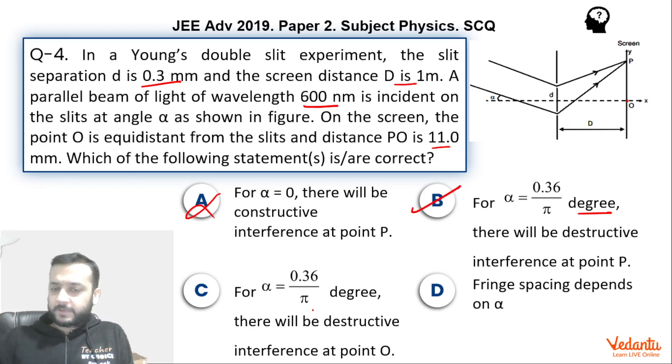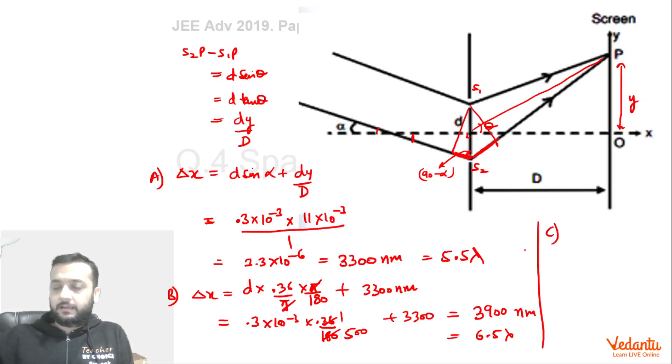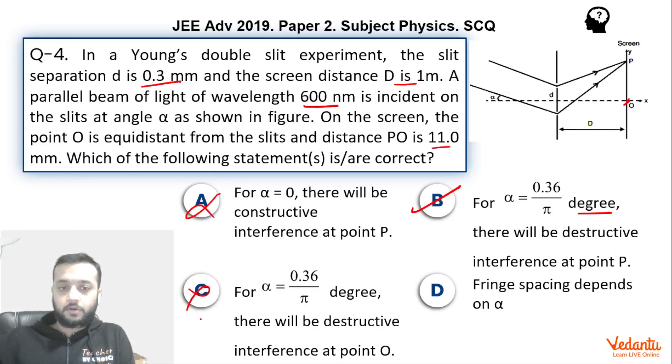Option C, 0.36 by pi again, there will be destructive interference at O. So now we are talking about O, that means center of the screen. Now it is very easy to see that for this value, we have already calculated this came out to be 600 nanometers. This was 3300. So y will be 0 for O. So delta x will be only 600 nanometers, because this part will become 0, 3300 part will become 0. So delta x will be only 600 nanometers. And this is nothing but lambda, which means it's a constructive interference. So this is again wrong because they are saying destructive.